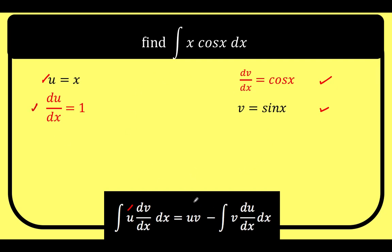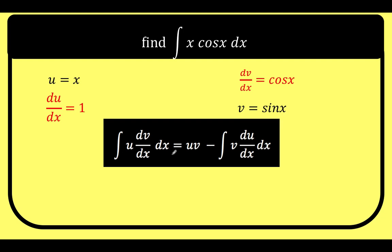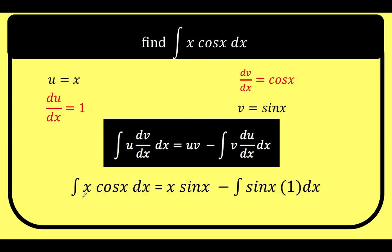We now know all the parts needed to apply the integration by parts formula. We are finding the antiderivative of x cosine x dx, where u equals x and dv/dx equals cosine x. Substituting into the formula: x for u, cosine x for dv/dx, with dx; then u·v gives x times sine x; minus the integral of v times du/dx, which is sine x times 1 dx.